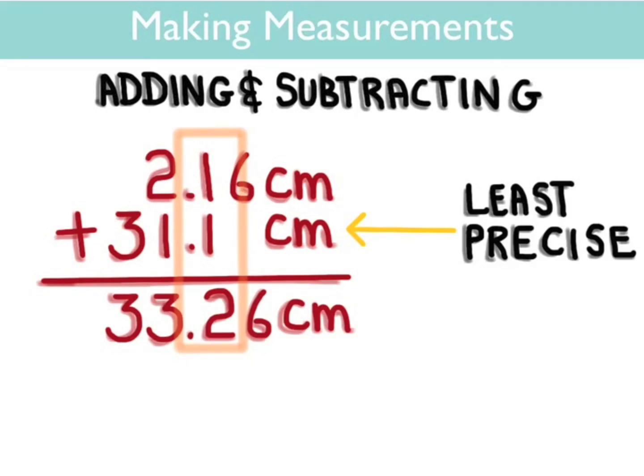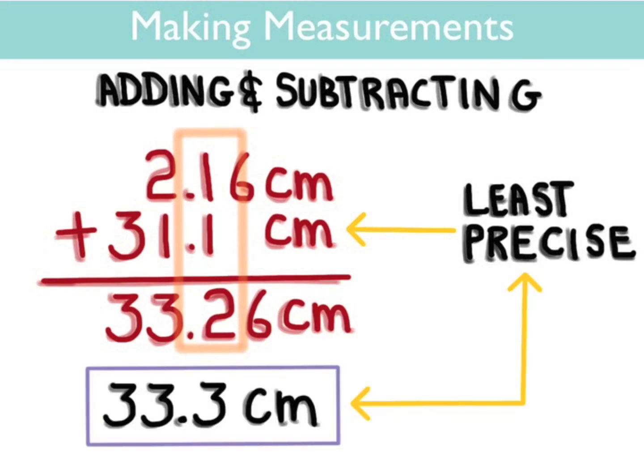It has more precision than the measurement 31.1, and you can't have that. Basically, you would be lying about your results. So the rule says that you must round your answer down to the place value of least certainty, which is in the tenths place. So your final answer needs to be rounded down to 33.3.